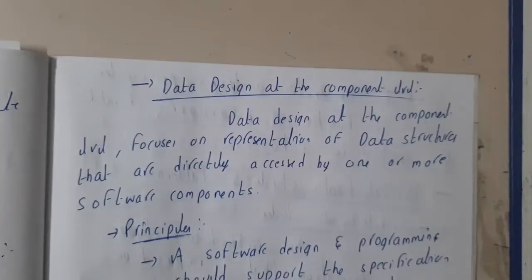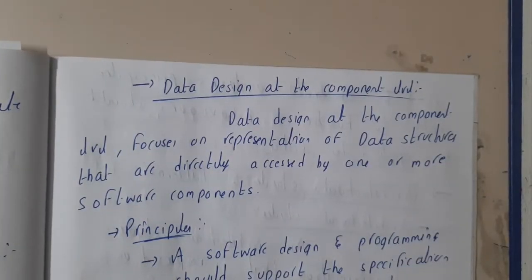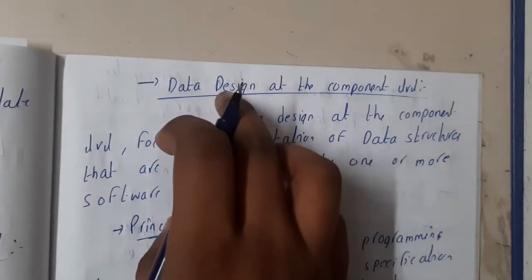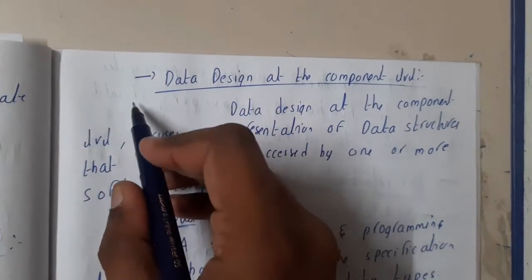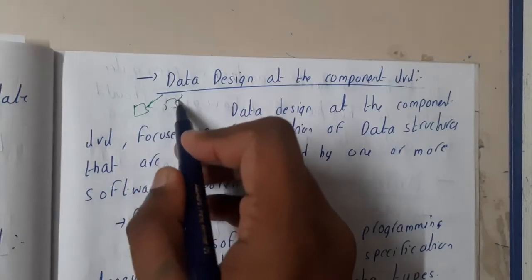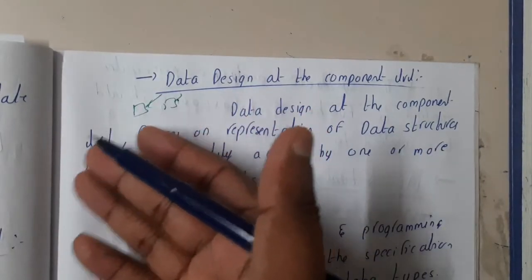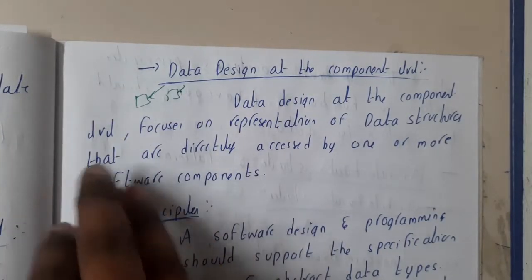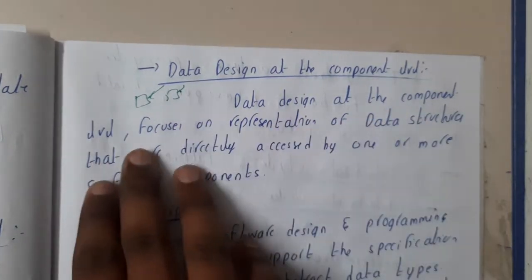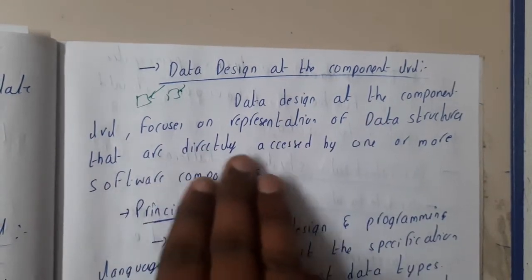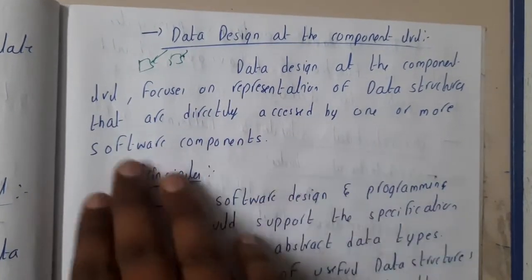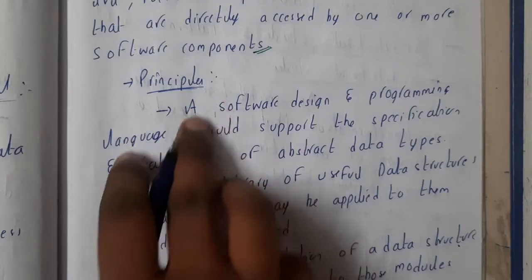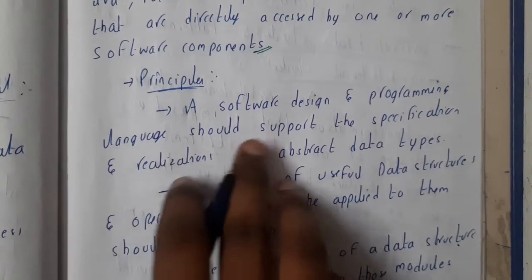Moving on to data design at the component level — this is focused on the coding aspect. When you are coding, each component will be taking in and outputting data. You need to focus on the structures you are using. Data design at the component level focuses on the representation of data structures that are directly accessed by one or more software components.